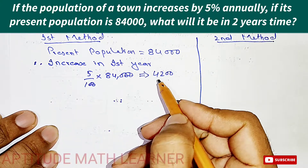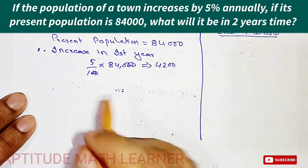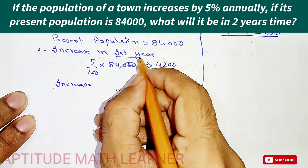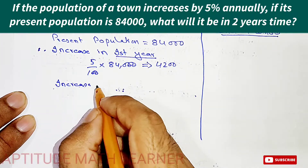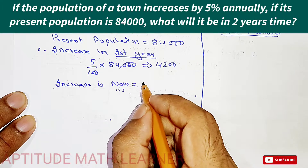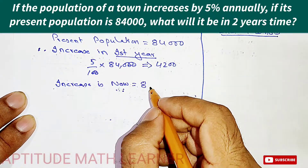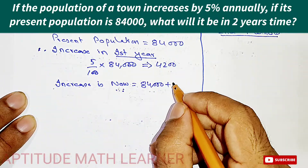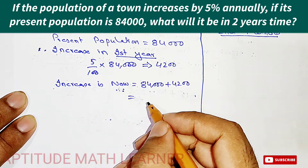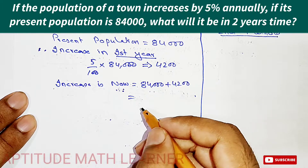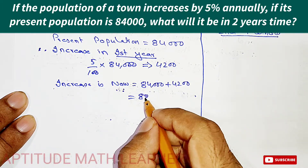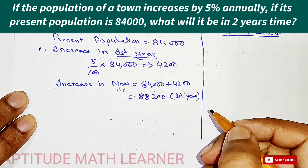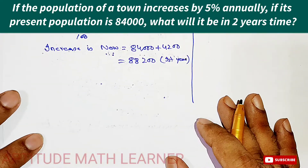The increase in the first year is 4,200. So the population after one year is 84,000 plus 4,200, which equals 88,200. I hope you have completely understood up to here.